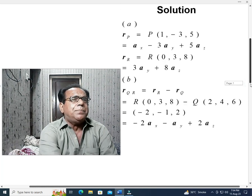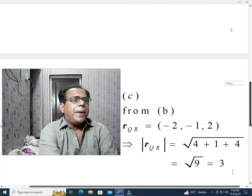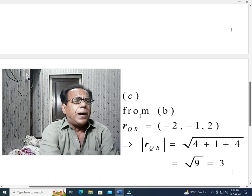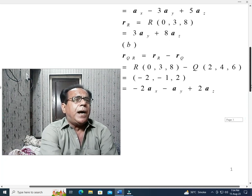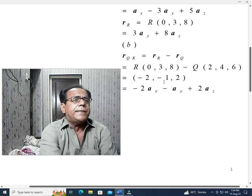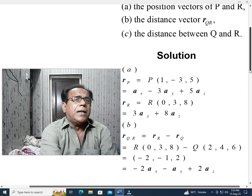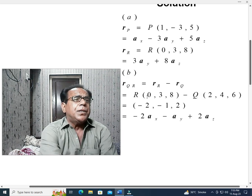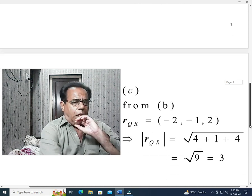Now we come to part C. The distance between Q and R. We are solving part C. But here in part C, we refer to part B. From B, we know that r_QR is equal to (-2,-1,2). In part B we have found this. Because in part C, we have to find distance between Q and R. This is the vector QR. When we will take its magnitude or modulus value, then it will be the distance between Q and R.